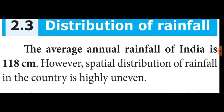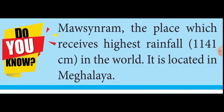The heaviest rainfall area is Mawsynram, the place which receives the highest rainfall in the world. It is located in Meghalaya state, in the western coast area, nearby Shillong. The western part of Rajasthan — the Thar Desert area — receives less than 50 centimeters of rainfall. It is called the Thar Desert because of this very low rainfall.